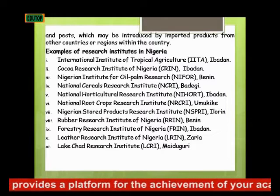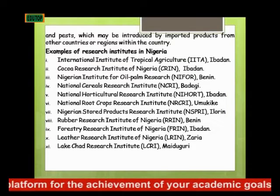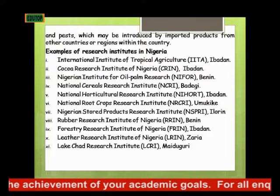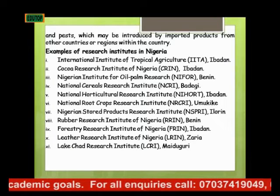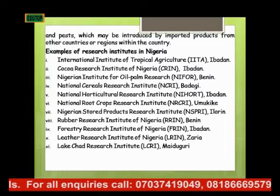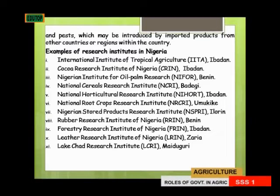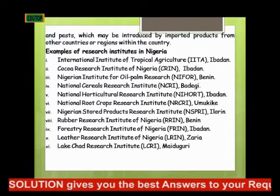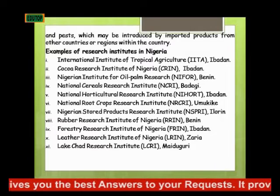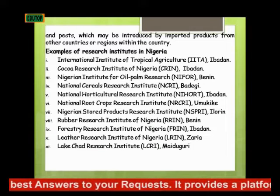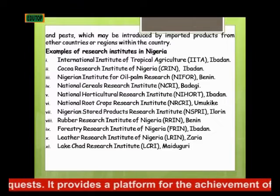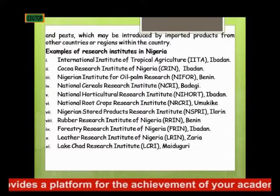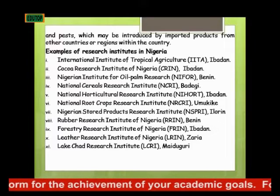Examples of research institutes include: the International Institute of Tropical Agriculture (IITA) in Ibadan; the Cocoa Research Institute of Nigeria (CRIN) in Ibadan; the Nigerian Institute for Oil Palm Research (NIFOR) in Benin; the National Cereal Research Institute (NCRI) in Ibadan; the National Root Crops Research Institute (NRCRI) in Umudike; and the Nigerian Stored Products Research Institute (NSPRI) in Ilorin.